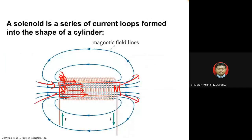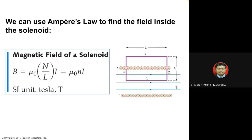Magnetic field lines come out of the north pole and go into the south pole. First, identify the direction of current in the solenoid to determine which end is north and which is south. Then use the equation: B = μ₀(N/L) × I, or equivalently B = μ₀nI.